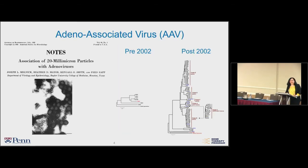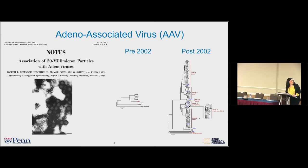The landscape of AAVs has changed quite significantly, and has changed even more as we'll hear throughout the meeting — from when it was first discovered in the 60s, to the massive explosion of different serotypes pre- and post-2002, and what the field looks like currently, where the vector toolkit has been enriched with new AAVs that specifically target not only tissues, but specific cell types within those tissues.